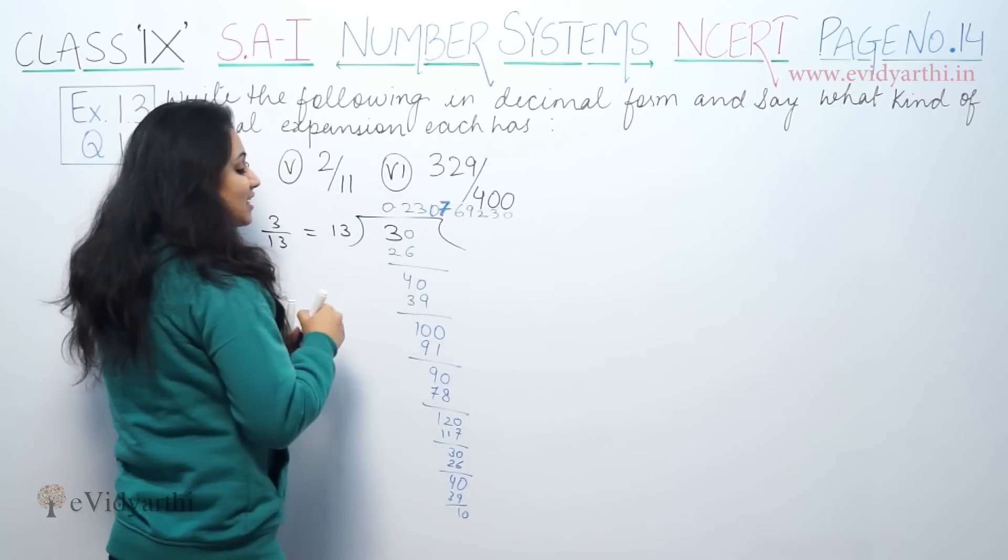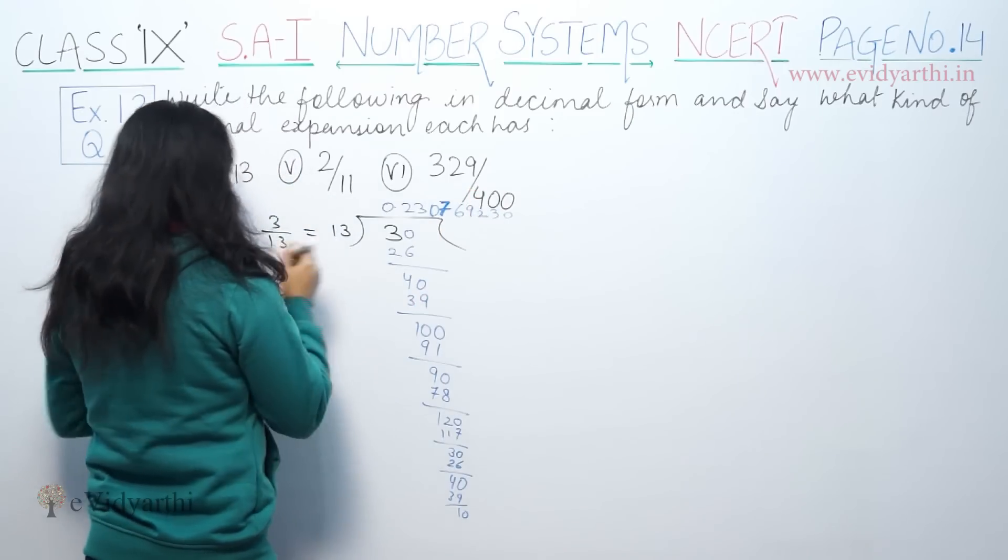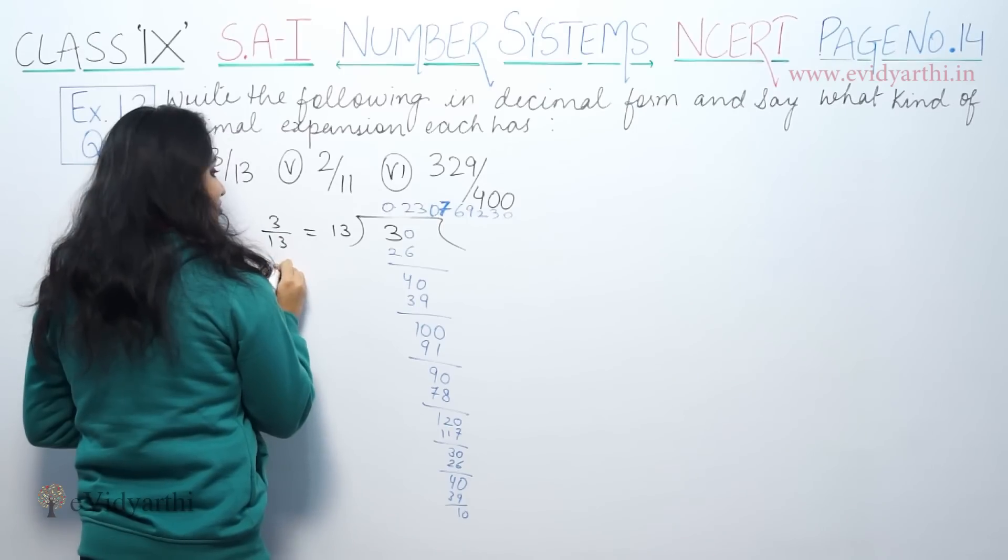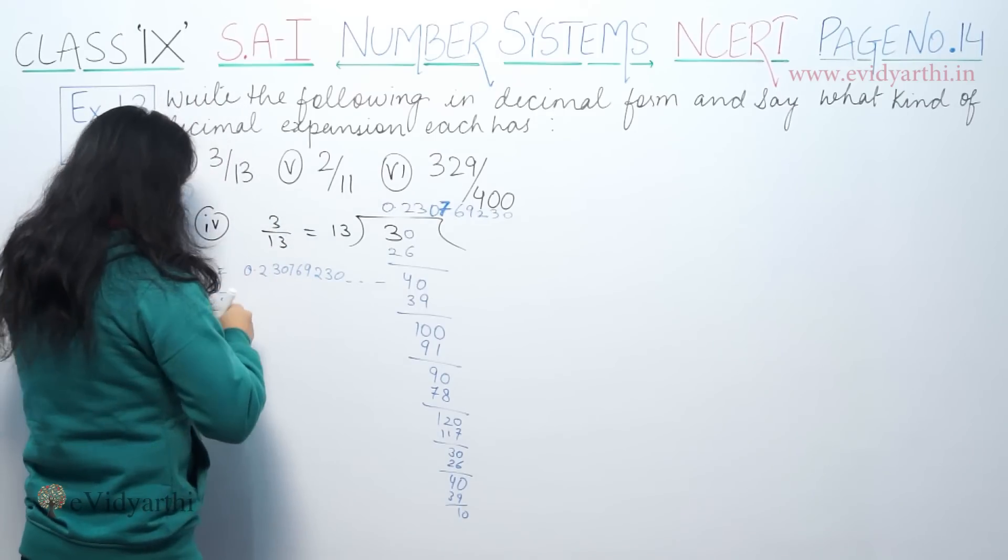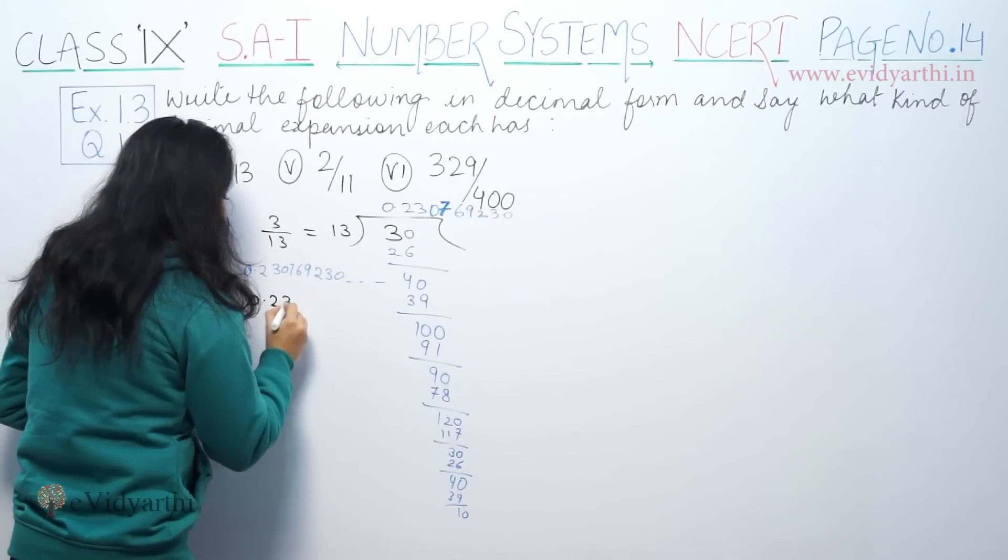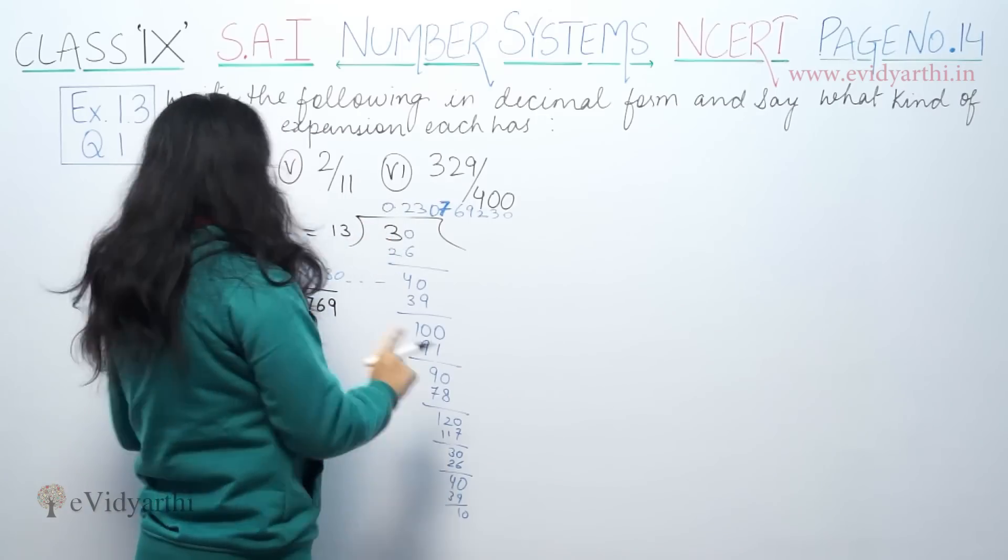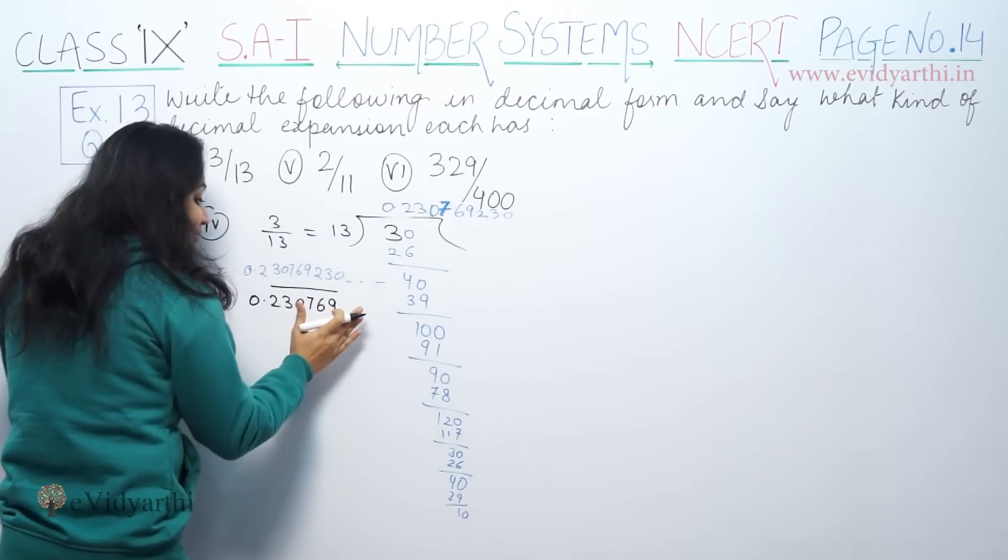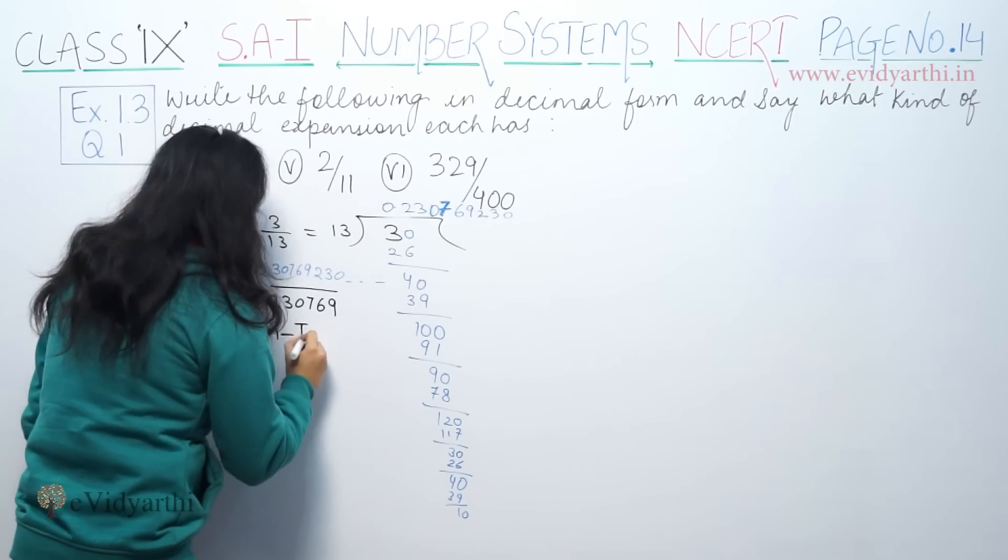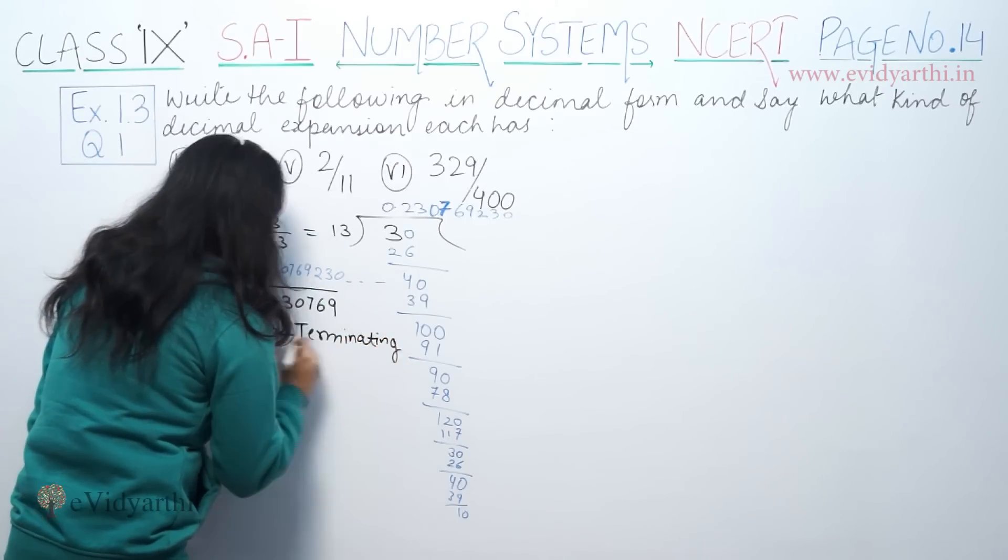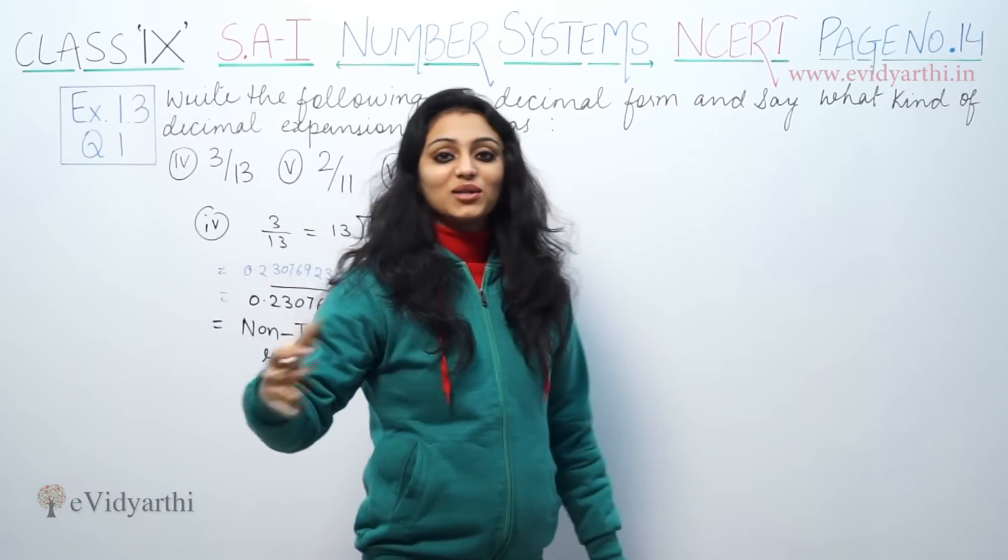You see here, 230769 again 230. This number repeats. So that means 0.230769230... It should repeat. So this answer is 0.230769 repeating. These numbers repeat. So this is a decimal number with non-terminating and repeating expansion.